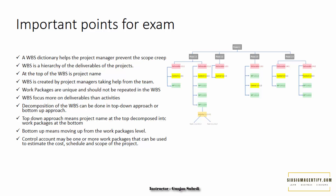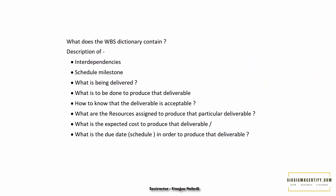Numbers are often seen in work packages, but they don't give detail on their own. To know more about the WBS work packages, we create a document that relates to the numbers assigned — the WBS dictionary. It contains descriptions of interdependencies between work packages, schedule milestones, what is being delivered, what needs to be done to produce the deliverable, acceptance criteria, resources assigned, expected cost, and due date or schedule.